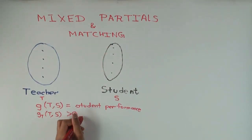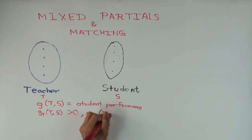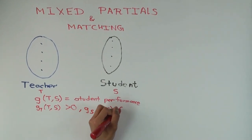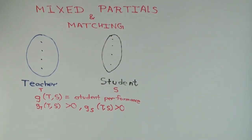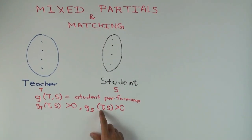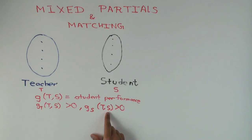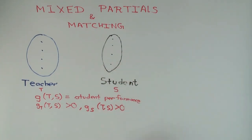g_s being greater than zero — what does that mean? It means marginal performance of the student: if you keep the teacher constant and increase student quality holding teacher quality constant, performance goes up.